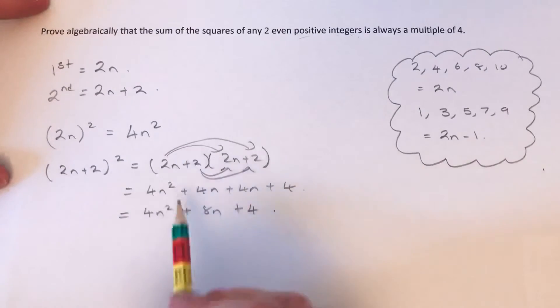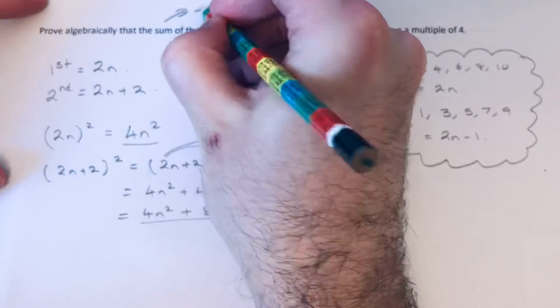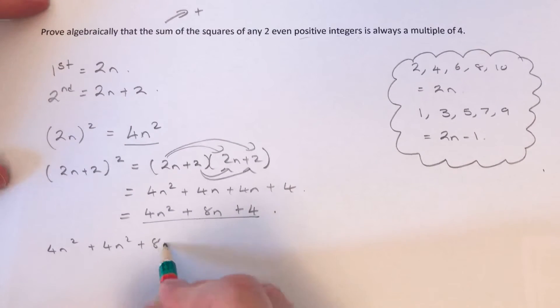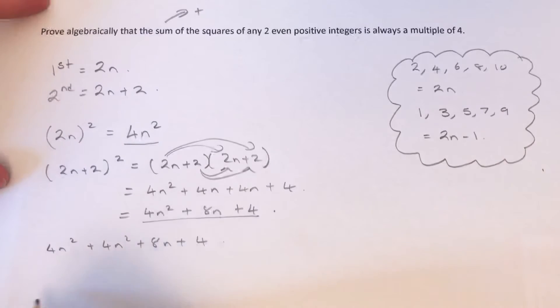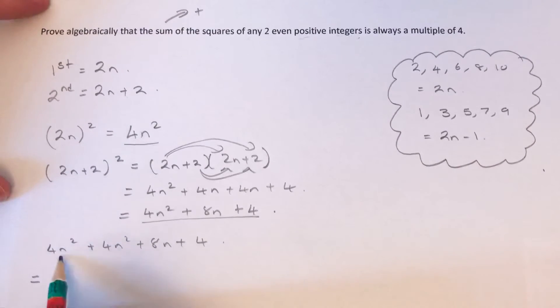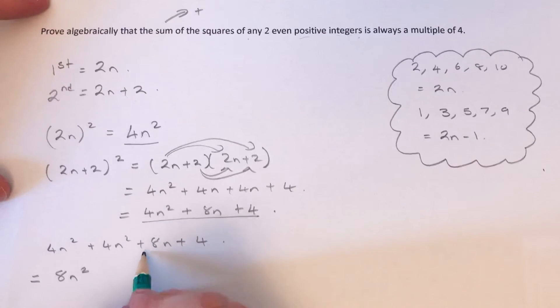So the next thing we want to do is add these two answers together because sum means add. So we've got 4n² plus 4n² plus 8n plus 4. So we can simplify this. 4n² add 4n² is 8n², and then we've just got the 8n and the plus 4.